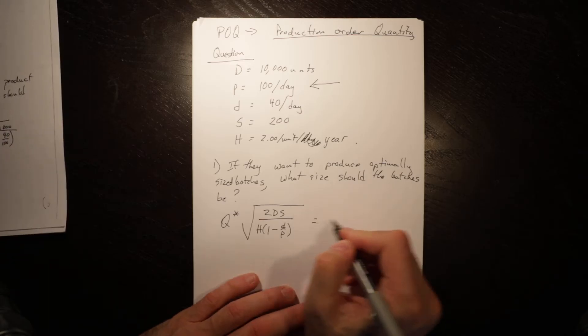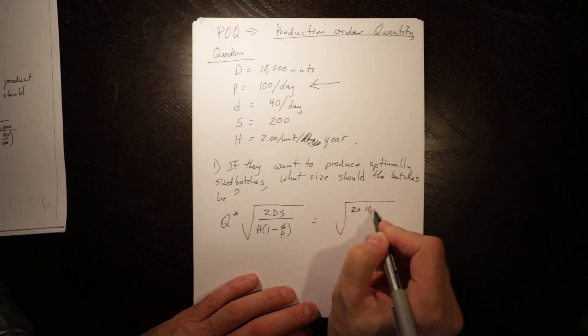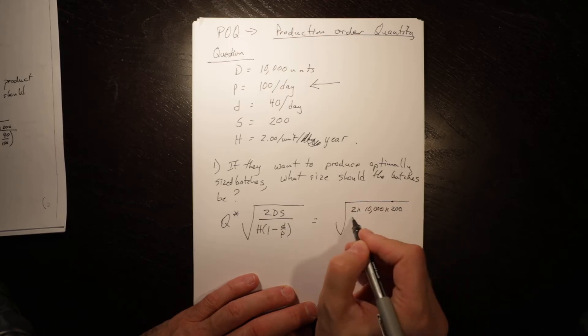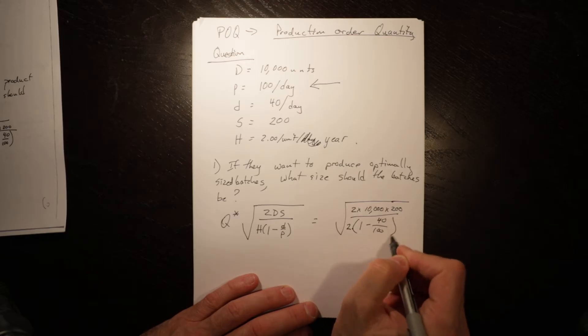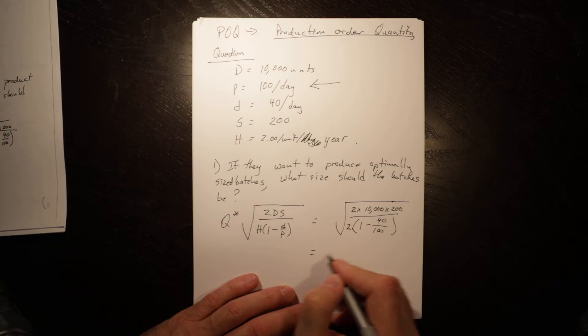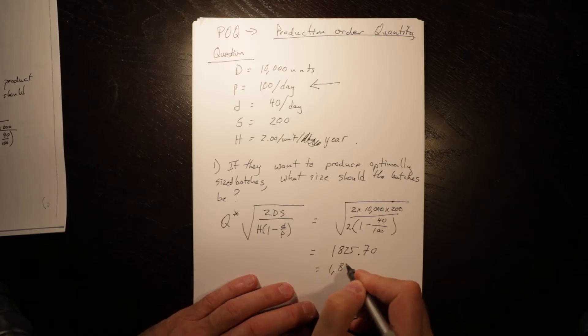So let's look at this. In this case it is equal to 2 times 10,000 times 200, which is the setup cost, divided by 2 times 1 minus 40 over 100. And if we do that, it is 1825.7 or 1826.